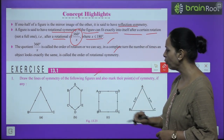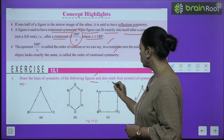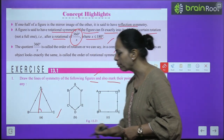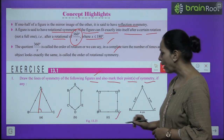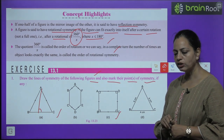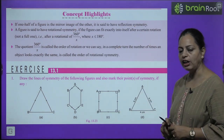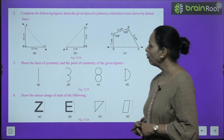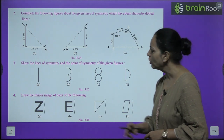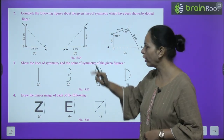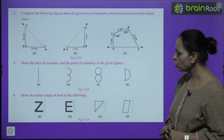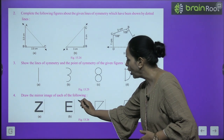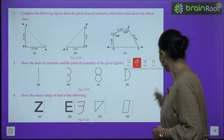Now Exercise 13.1. Question 1: Draw the lines of symmetry of the following figures and mark their point of symmetry if any. Part A is an isosceles triangle — it has one line of symmetry, the perpendicular bisector, and no point of symmetry. Part B is an equilateral triangle — it has three lines of symmetry. Part C is a square — it has four lines of symmetry. Question 2: Complete the following figures about the given lines of symmetry shown by dotted lines. Question 3 you can try on your own. Question 4: Draw the mirror image.